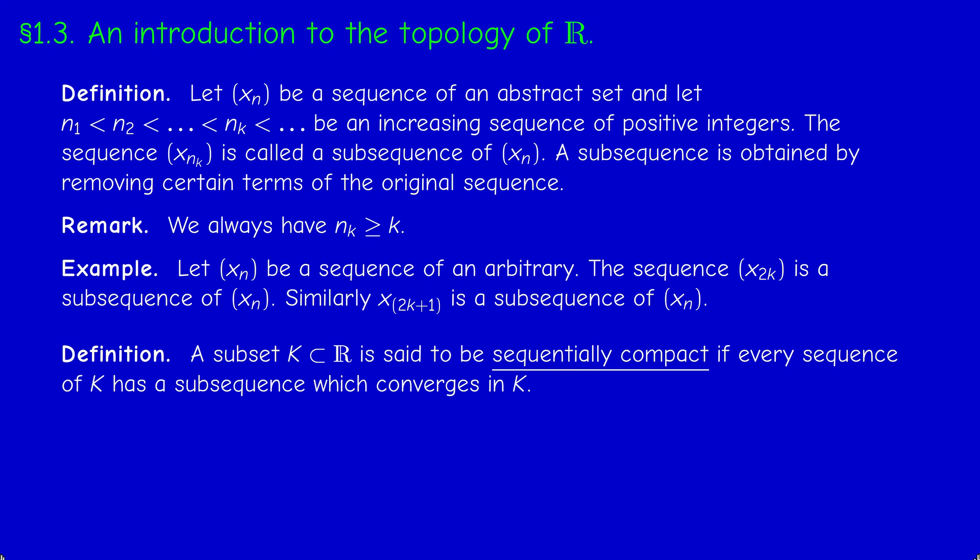Now we say that a subset K of R is said to be sequentially compact if every sequence of K has a subsequence which converges in K. This is a condition, a property of a subset - not all subsets of R satisfy this condition.